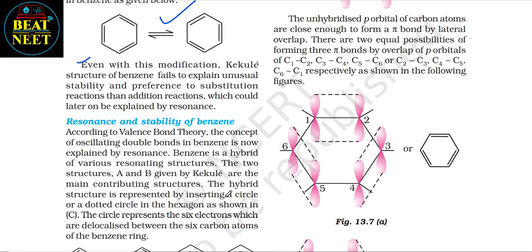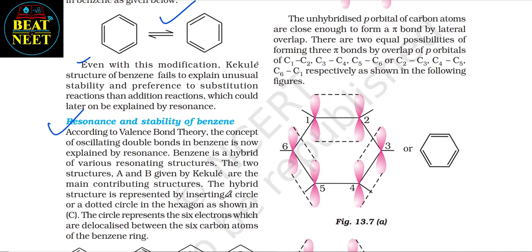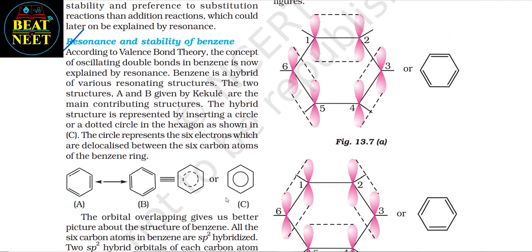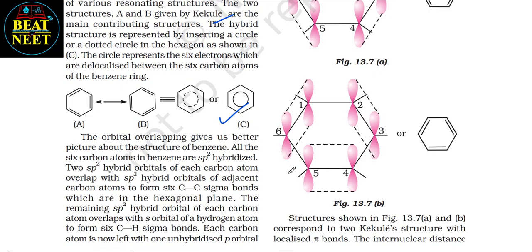Even with this modification, the Kekulé structure fails to explain the unusual stability and preference for substitution over addition reactions, which was later explained by resonance. According to valence bond theory, benzene is a hybrid of various resonating structures; the two Kekulé structures (a and b) are the main contributing structures. The hybrid structure is represented by inserting a circle or dotted circle in the hexagon. The circle represents six electrons delocalized over the six carbon atoms of the benzene ring.